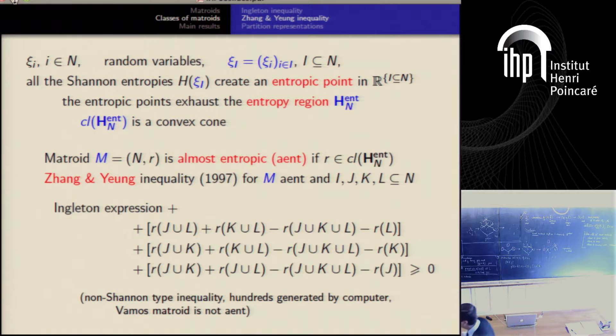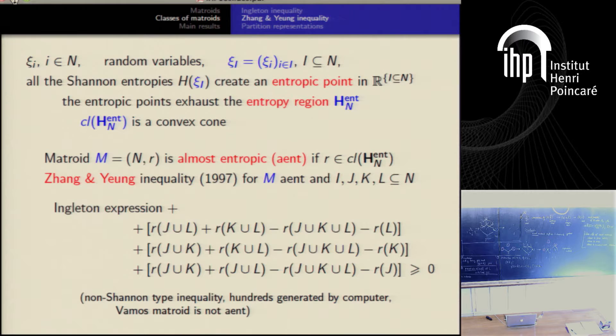So we have seen it. And for me, Zhang-Yang inequality is this Ingleton expression plus three corrections, yes? And the three brackets are non-negative because of submodularity. And that's why Zhang-Yang inequality is weaker than Ingleton inequality. And I can skip this.